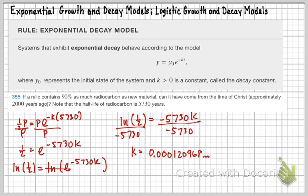And then it says, if it contains 90% as much radiocarbon as new material, can it have come from the time of Christ from 2,000 years ago? Note that the half-life of radioactive carbon is 5,730 years. So, this would be my k for the general equation now. What I mean by that is, my actual formula is going to be y equals y naught e to the negative 0.000120968t. That's what the formula is.